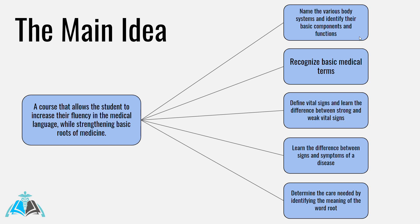By the end of this course, you're going to have a firm grasp on the ability to name the various body systems and identify their basic components and functions, recognize basic medical terms, define vital signs and learn the difference between strong and weak vital signs, learn the difference between signs and symptoms of a disease, and determine the care needed by identifying the meaning of the word root. That last one is included for a specific reason.